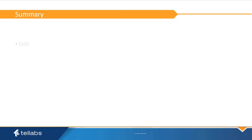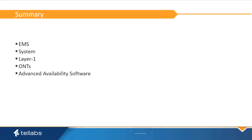In this video, you have learned the high availability features that make the Telabs OpticalLAN solution a stable platform. These include EMS functionality, system functionality, layer 1 infrastructure, ONTs, and advanced availability software features.